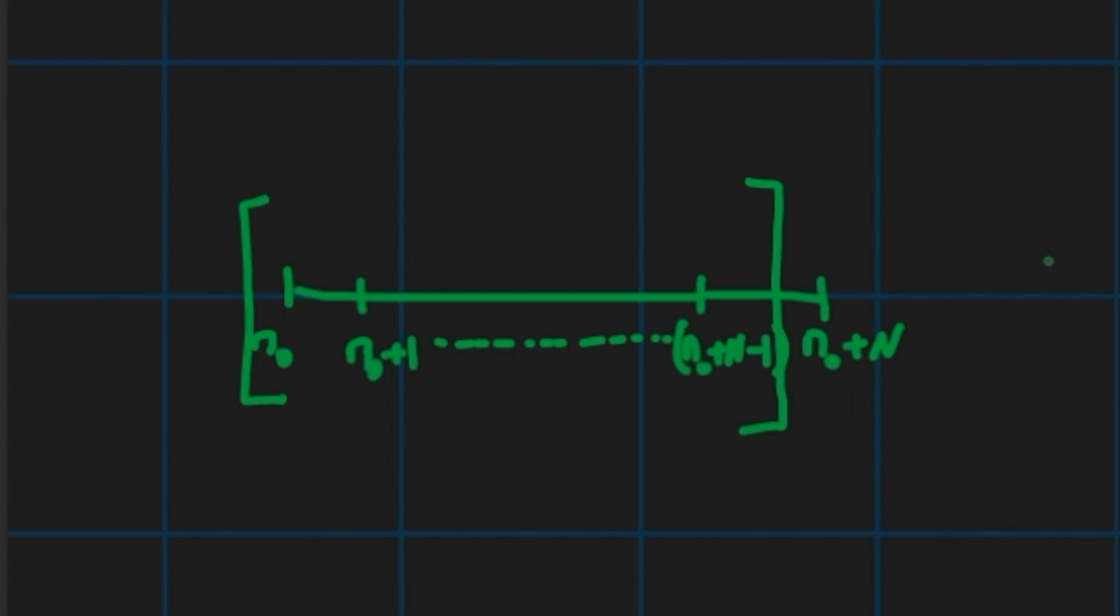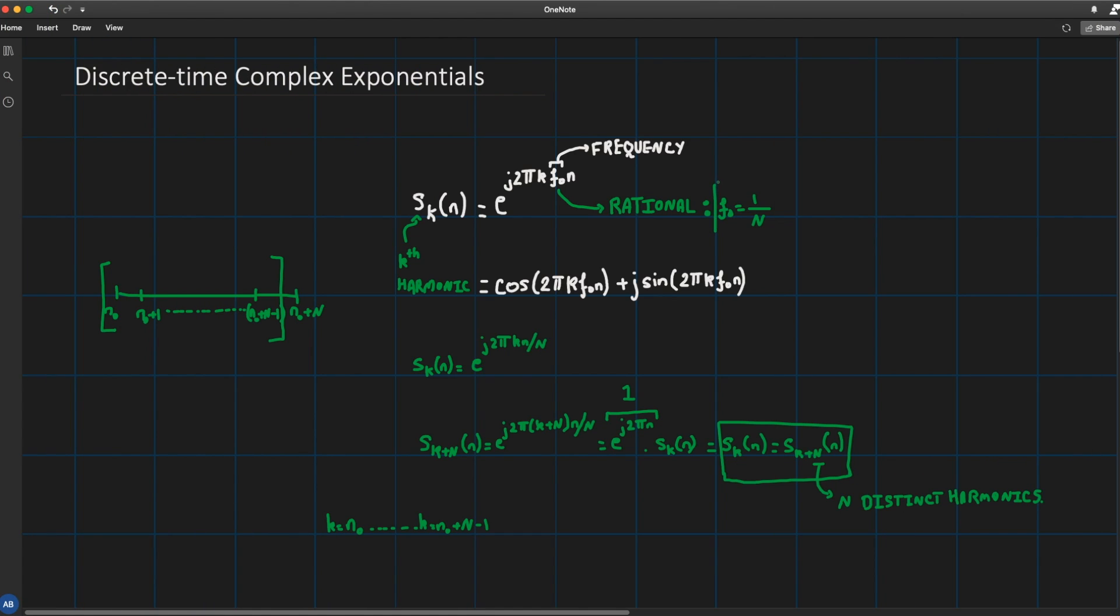Now over here all those harmonics have a fundamental frequency that is clearly 1 over N, so it's all based on this choice. It is because I wrote the k-th harmonic with frequency or relative frequency 1 over N so this guy is the relative frequency.